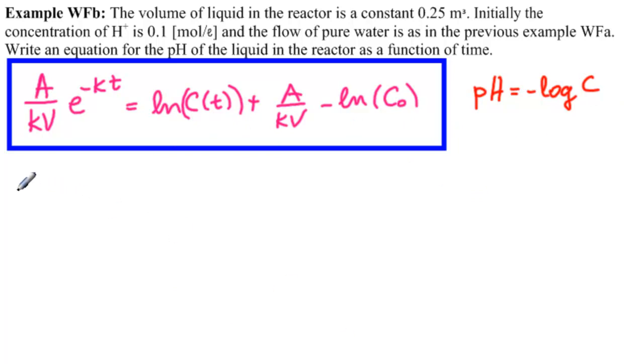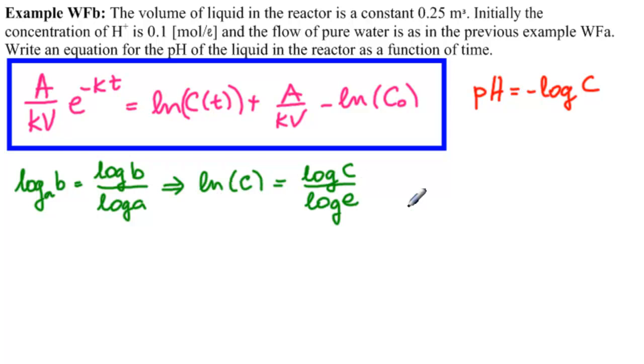Well, you might know the formula. Log base A of B is log base 10 of B over log of A. So that means that ln of C is equal to log of C over log of the base, which is E, which most people write as ln of C equal to 2.3 log of C. So if you remember this formula, that's fine. If you don't, I know how to get it.